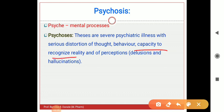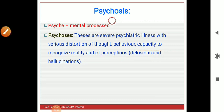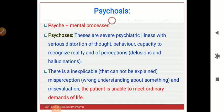In psychosis, there is a loss of capacity to identify or recognize what is real and what is not real. There is a change or distortion of perceptions — that means hallucinations. Psychosis is a very different condition from other disorders. There is an inexplicable misperception; the person cannot understand their surrounding environment.